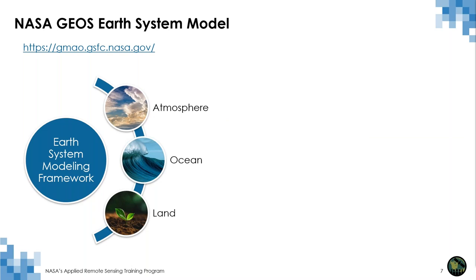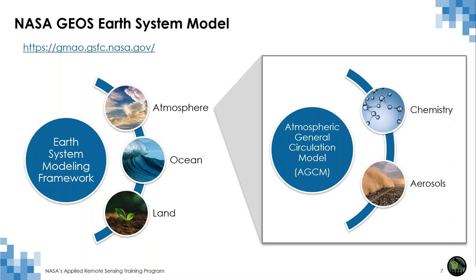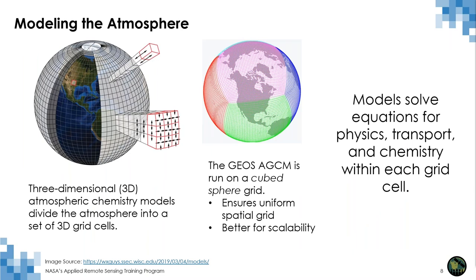In this presentation, we're going to focus primarily on the Atmospheric General Circulation Model, or AGCM, and specifically the simulation of aerosols and trace gas chemistry within the AGCM. The AGCM is a global three-dimensional atmospheric model. It's a grid-based model, meaning the atmosphere is divided into a set of three-dimensional grid cells. The size of the grid cells determines the spatial resolution of the model — the smaller the grid cell, the more detailed the information, and the more computing power needed to run the model.